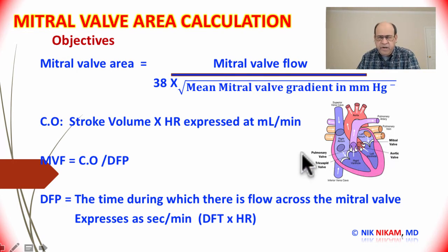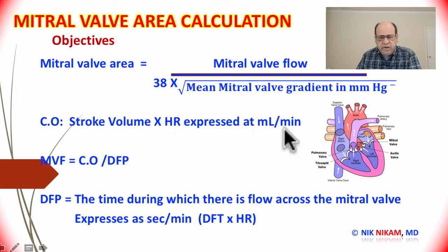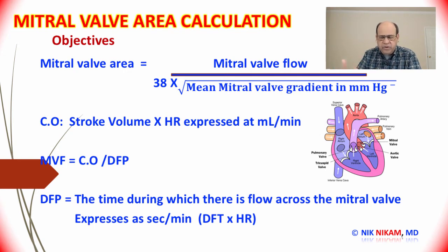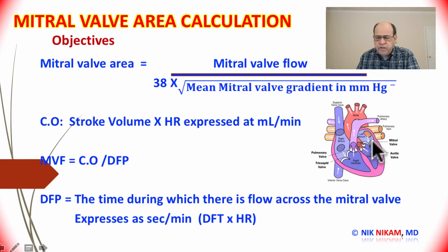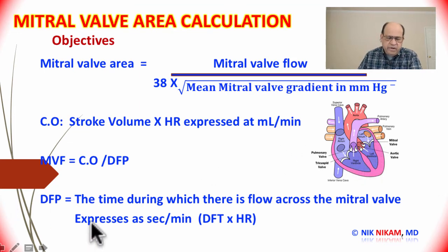We can calculate the mitral valve flow indirectly by calculating the cardiac output first. Cardiac output is basically stroke volume multiplied by heart rate, expressed as liters per minute or milliliters per minute. Since cardiac output is expressed as 4 or 5 liters per minute, we multiply by 1000 to give us 4000 or 5000 milliliters per minute. However, the mitral flow is only when the mitral valve is open; during ventricular systole the mitral valve is closed, so there is no flow across it. So we calculate another parameter called the diastolic filling period.